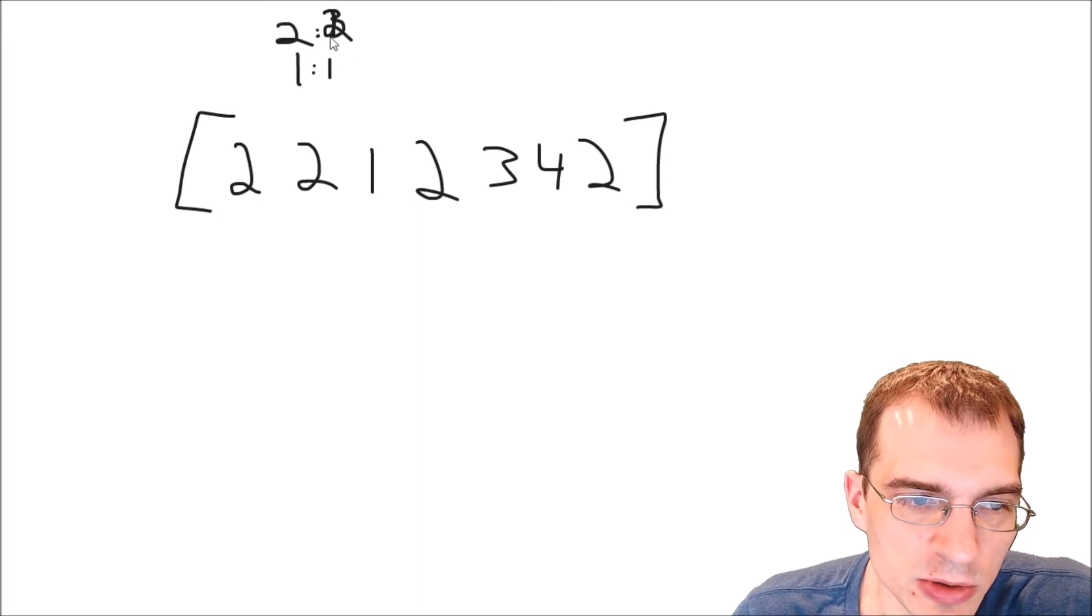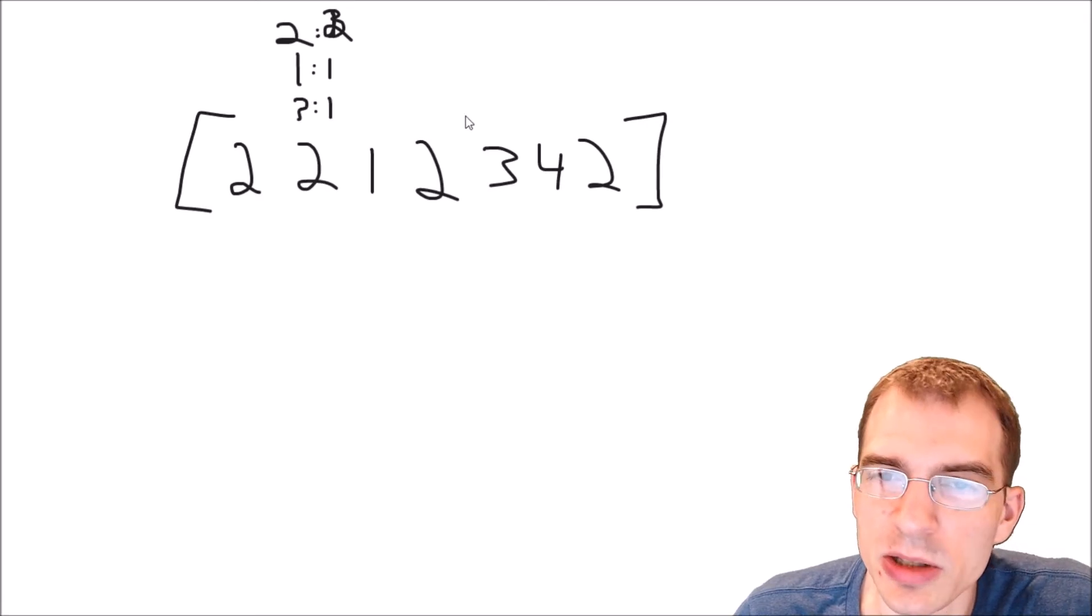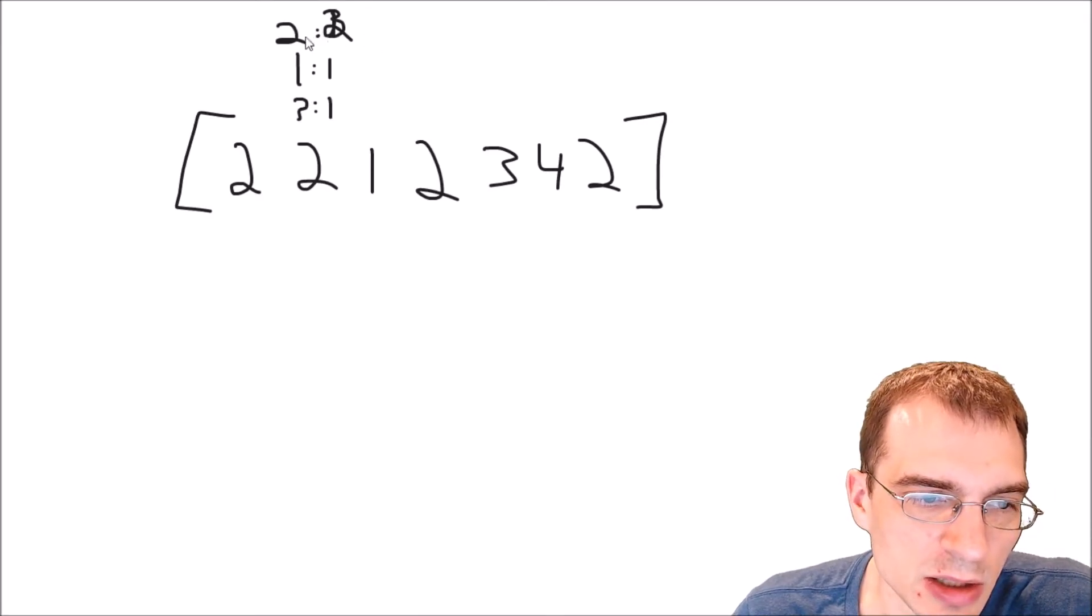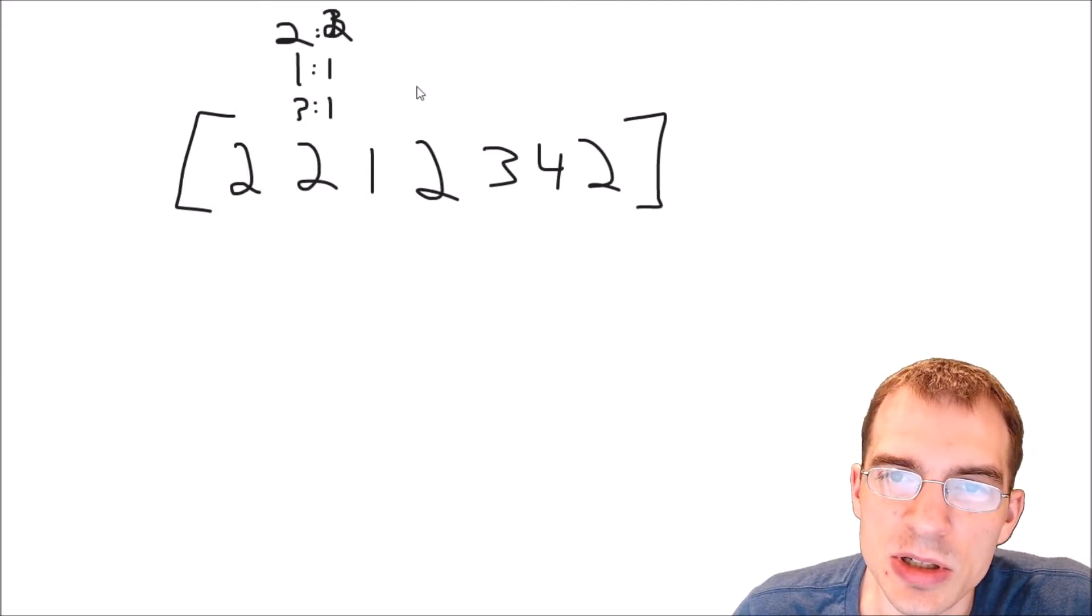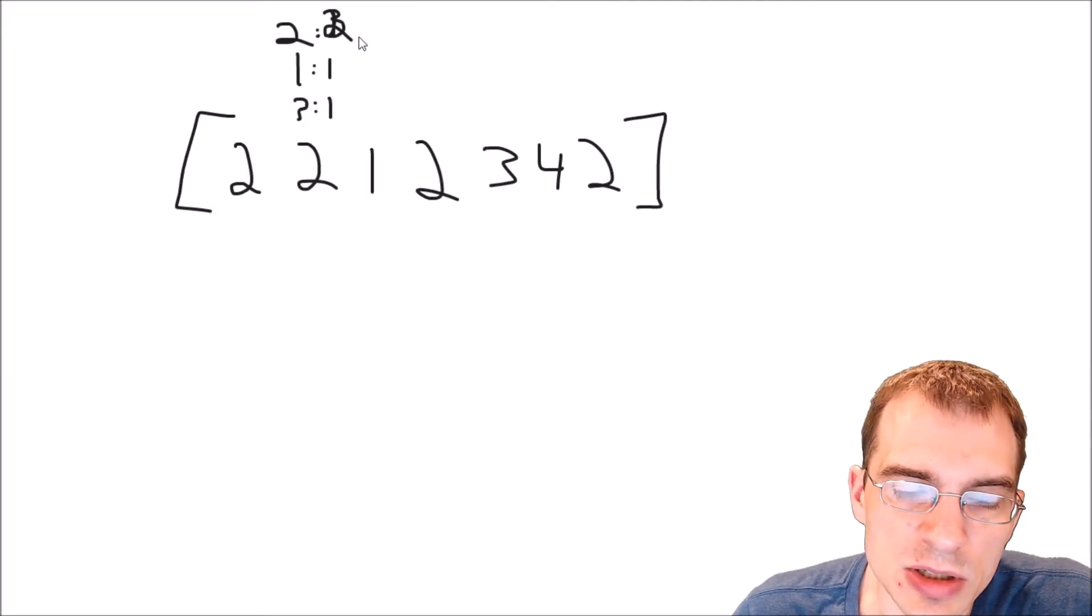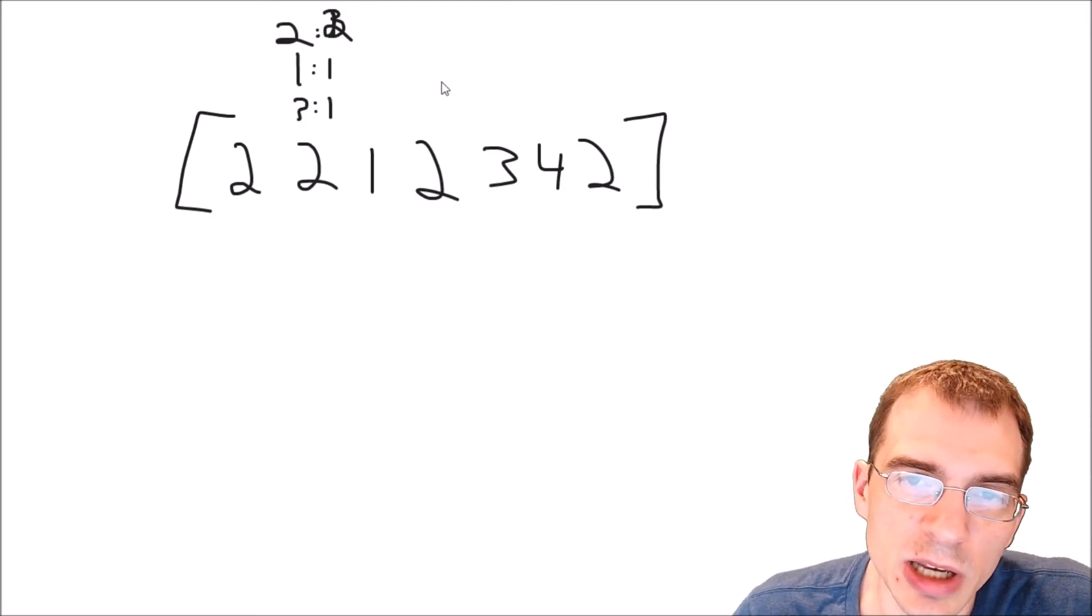We see 2 again so we iterate that up to 3. We see a 3 so that's a new thing. And at some point we get through the whole array and then we're left with a list or dictionary we might use for this in Python that shows each value that exists and how many times it occurs. And then we can just extract whatever the max value is from that and return that as the answer.